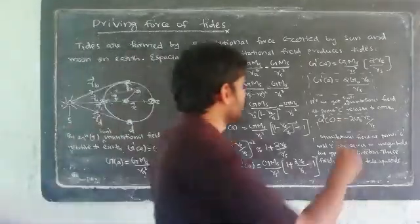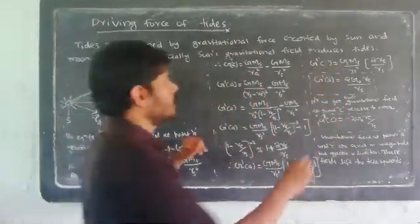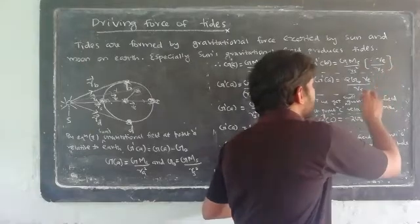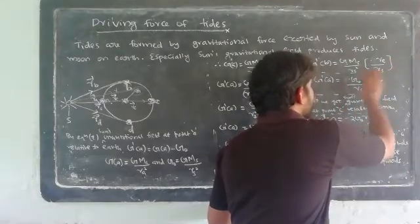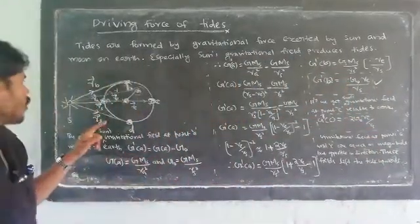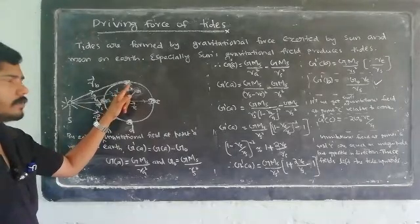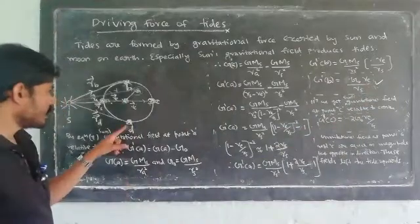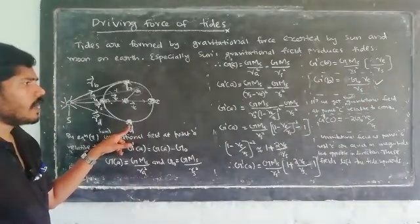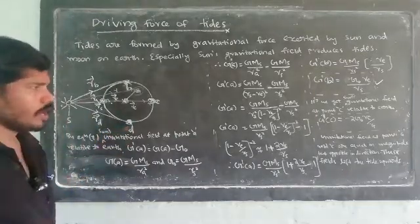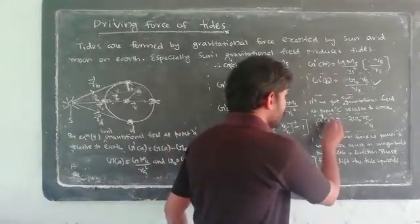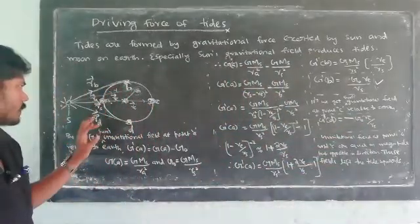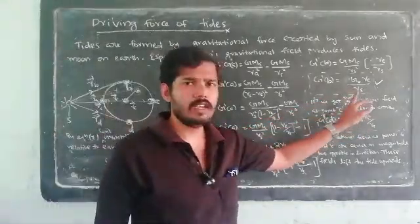Now for point B at the pole: g'(B) = −G0·RE/RS, directed inward (toward earth's center). Similarly for point D: g'(D) = −G0·RE/RS. The gravitational field of the sun relative to the earth at points B and D is equal in magnitude and opposite in direction. In the polar region, this results in tidal depression.